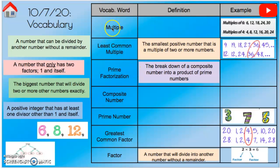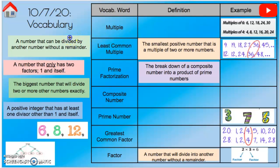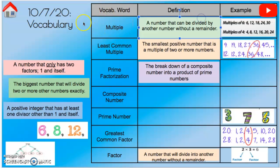Let's start with 'multiple' — we are missing the definition for multiple. Multiples of six are six, twelve, eighteen, twenty-four, thirty, and so on. Multiples of four are four, eight, twelve, sixteen, twenty, twenty-four, and they keep going on. A multiple is a number that can be divided by another number without a remainder — it can go in completely without any remainders.